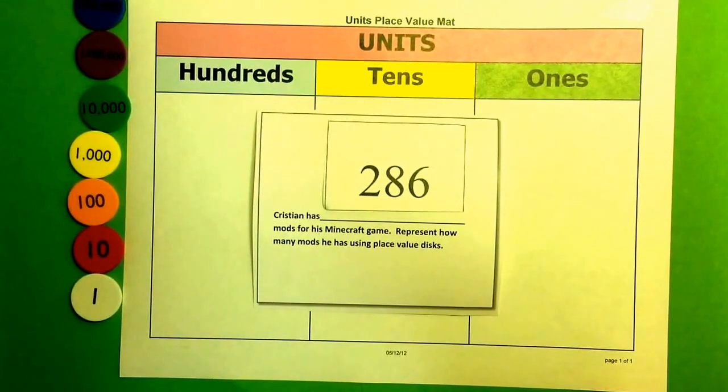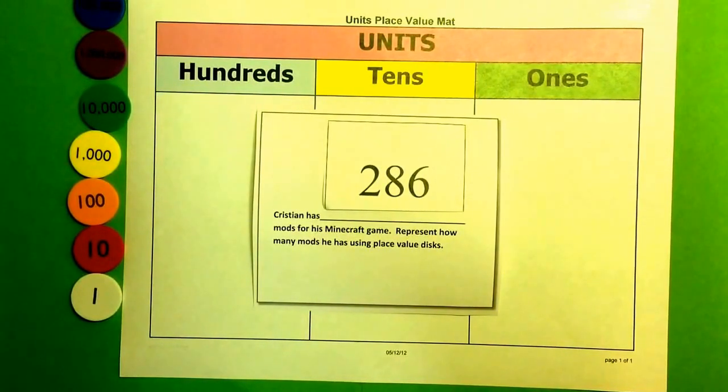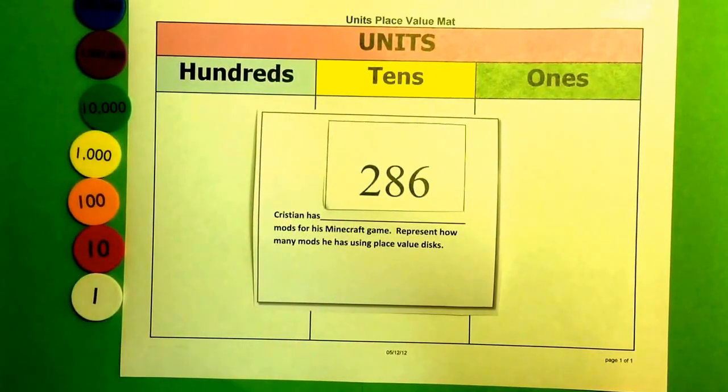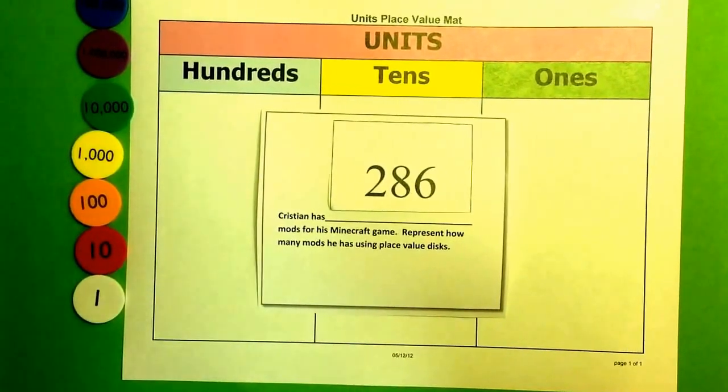This is the number card that the student may pick up from a stack. And it now says, Christian has 286 mods for his Minecraft game. So the students need to represent 286 using place value disks.